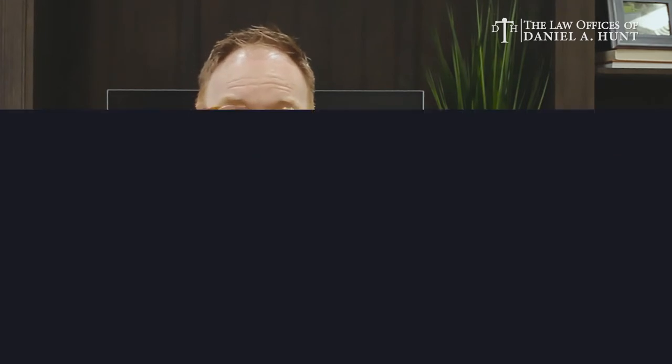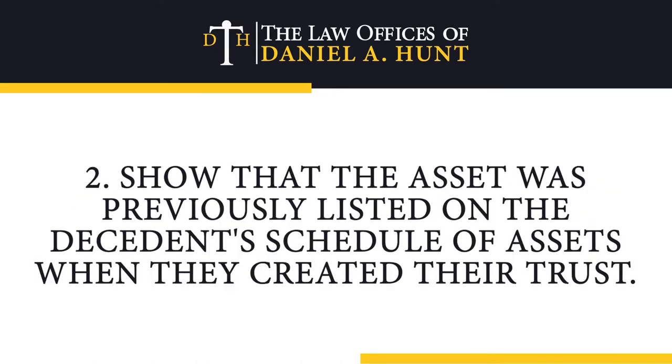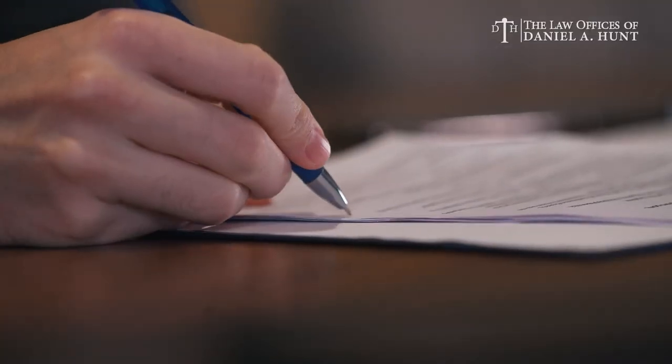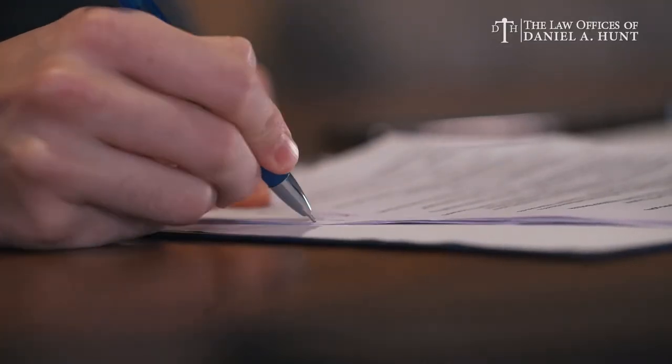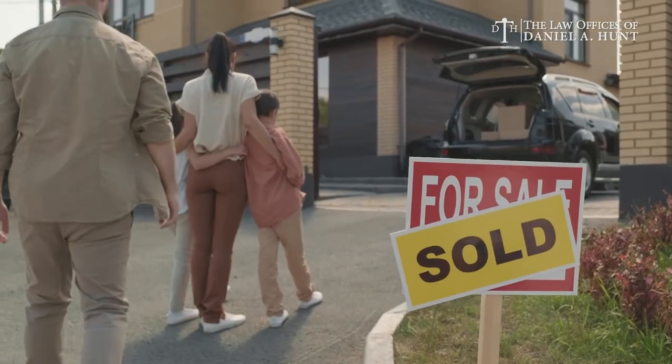If the house was taken out of the trust for a refinance, show evidence, like a deed, that the real property had previously been transferred into the trust. If the asset was listed on the decedent's schedule of assets when they created their trust, this shows clear intent to include their property in their trust. If one house was sold and the proceeds were used to purchase a new house that was omitted from the trust, use financial statements and affidavits to show that the new home was purchased with trust funds and establish the decedent's intent to include it in their trust.